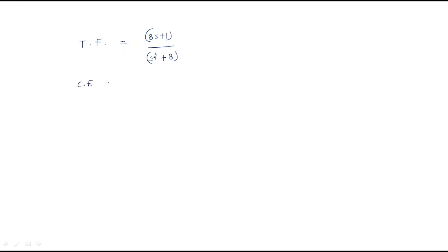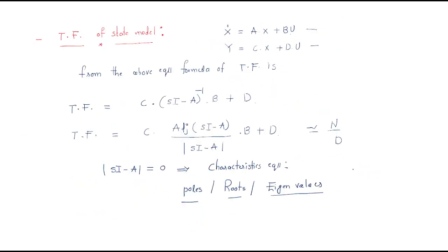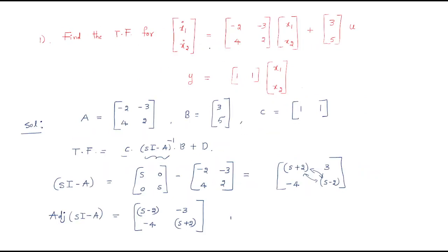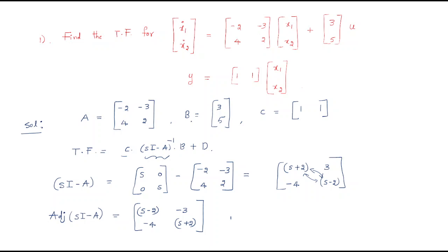The characteristic equation is s² + 8 = 0, so s² = -8 = j²×8, giving poles at s = +j√8 and s = -j√8. The two poles are located on the imaginary axis in the s-plane — one at +j√8 and one at -j√8. This is a conditionally stable system. This is the complete procedure for finding the transfer function from a state model.